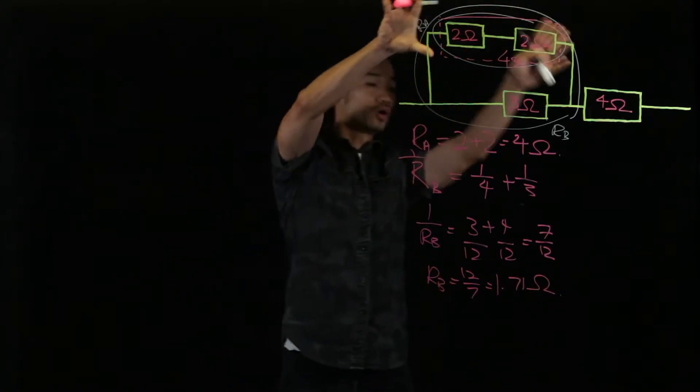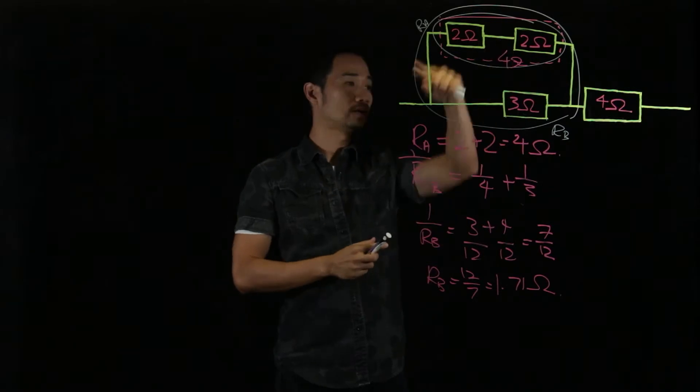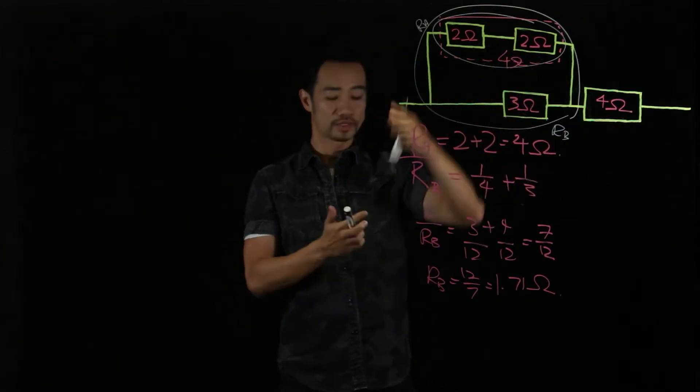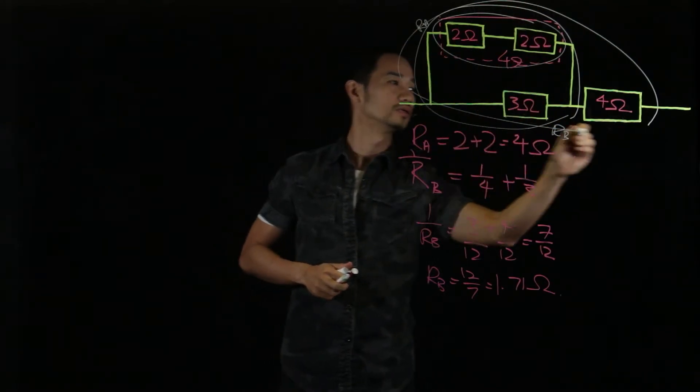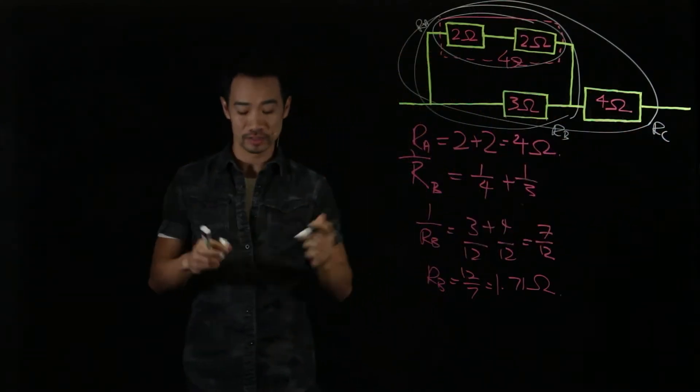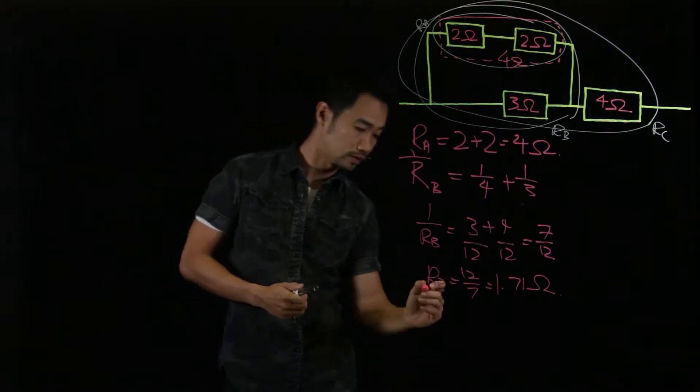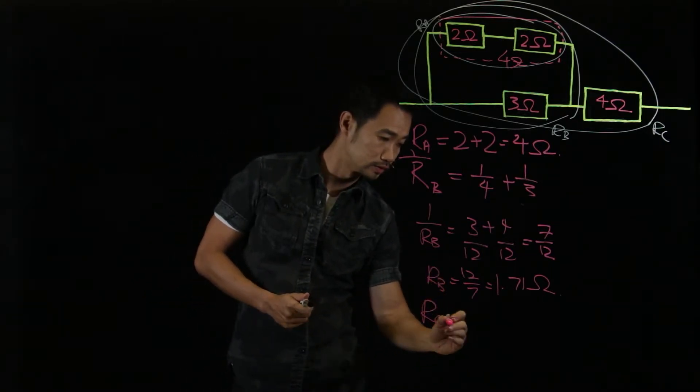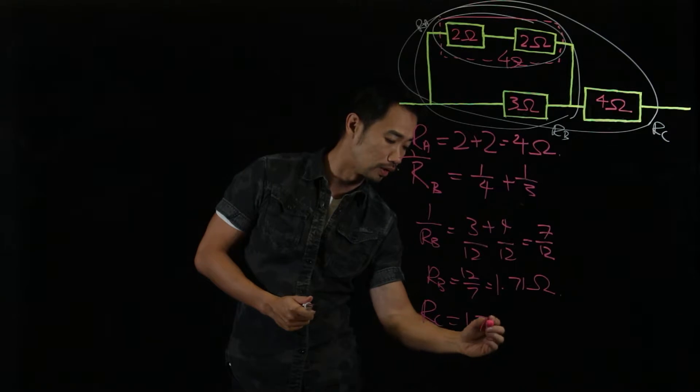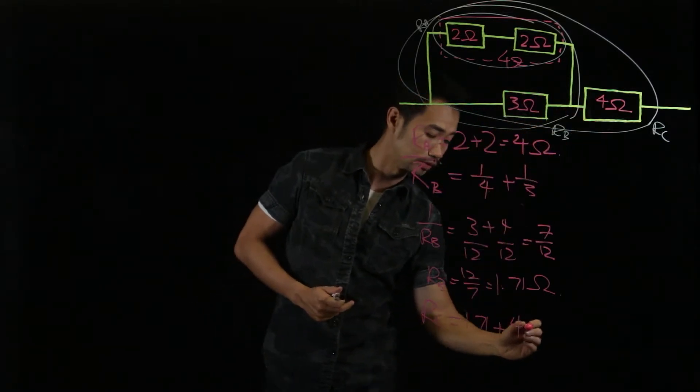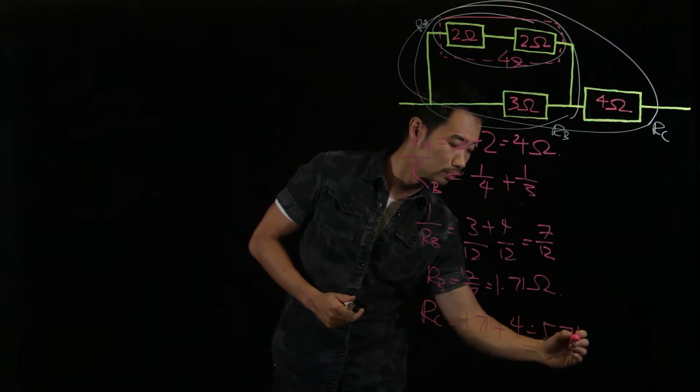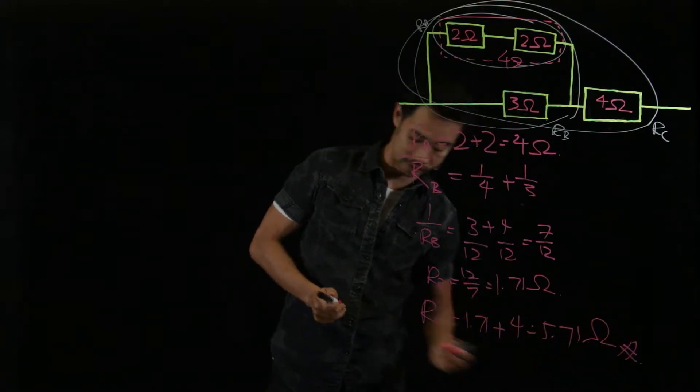And now this whole thing, Rb with 4, they are actually connected in the same pathway. So this whole thing is your final one, Rc. And they are actually connected in series. So Rc is equal to 1.71. And series, how do we add them together? Just add straight. Plus 4 is 5.71 ohms. So that's your final answer.